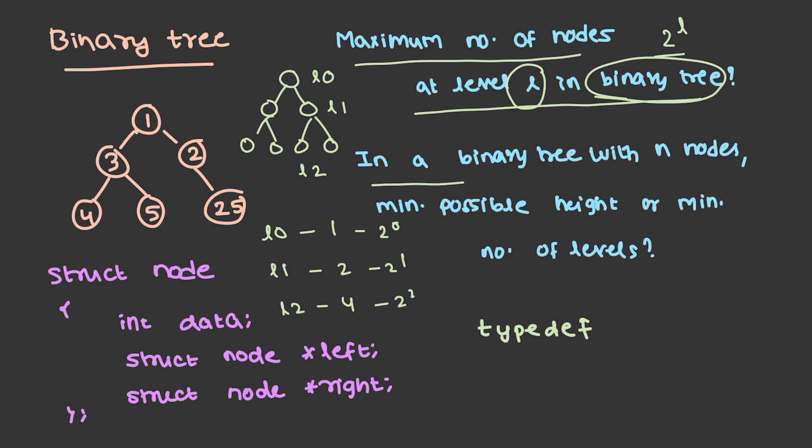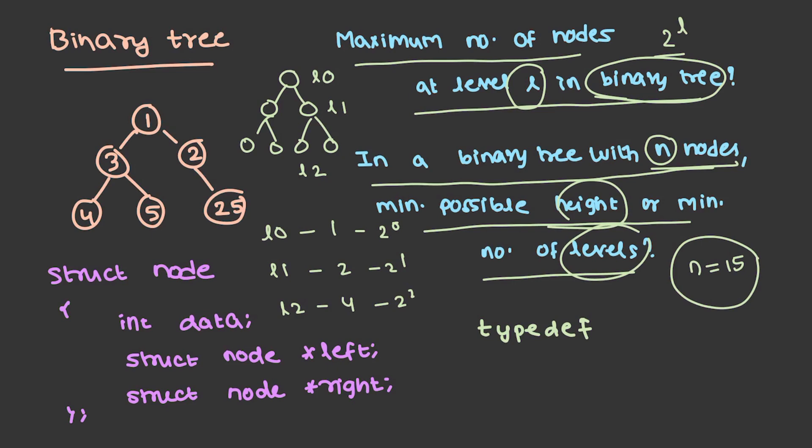Even this question, in a binary tree with n nodes, minimum possible height or minimum number of levels. You can take a tree, you can assume a value for n, let's say n is equal to 15 or something. You can take a tree, then with the help of n, you can represent it in form of a tree with this many number of nodes and you can find out the height or levels or whatever which is asked. But just make sure, before you mark the answer, try it with two or more examples, just to be clear.